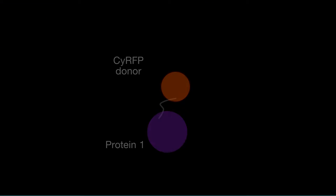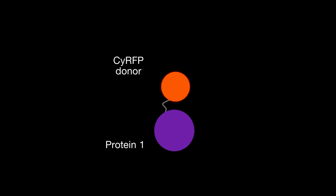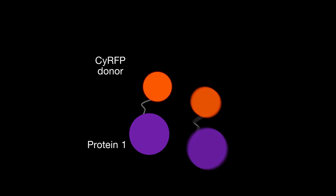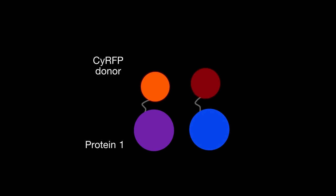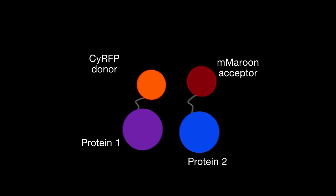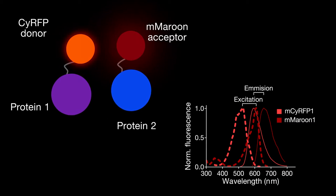The team created a red FRET donor by making other tweaks to CyRFP, including making sure it didn't dimerize. They then identified a far-red FRET acceptor named mMaroon, which provided the highest FRET efficiency with the donor.